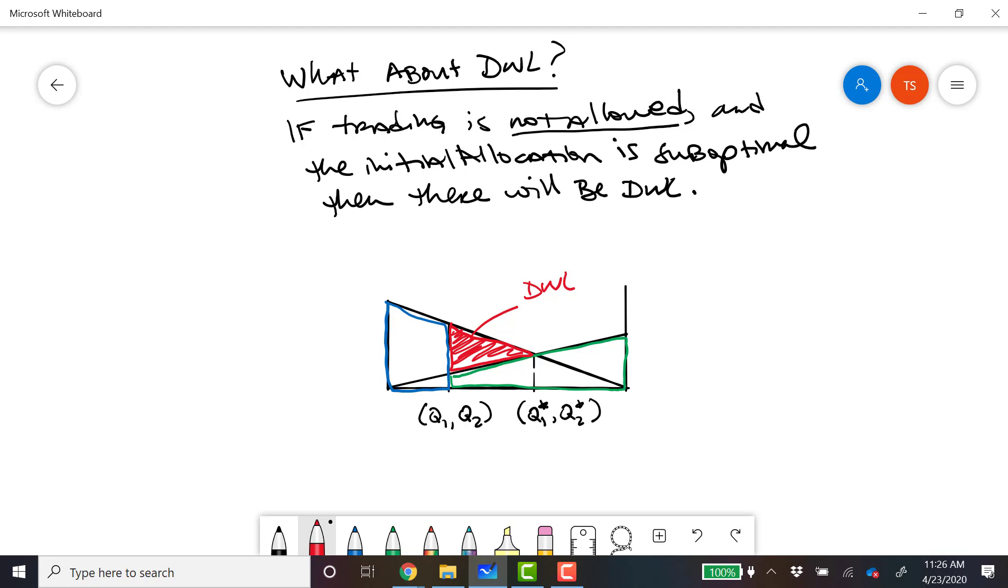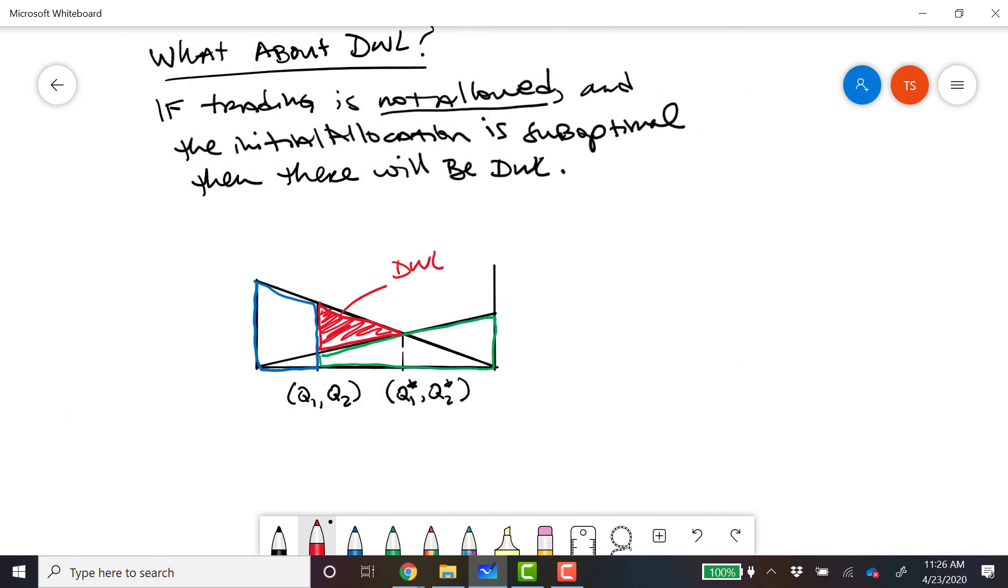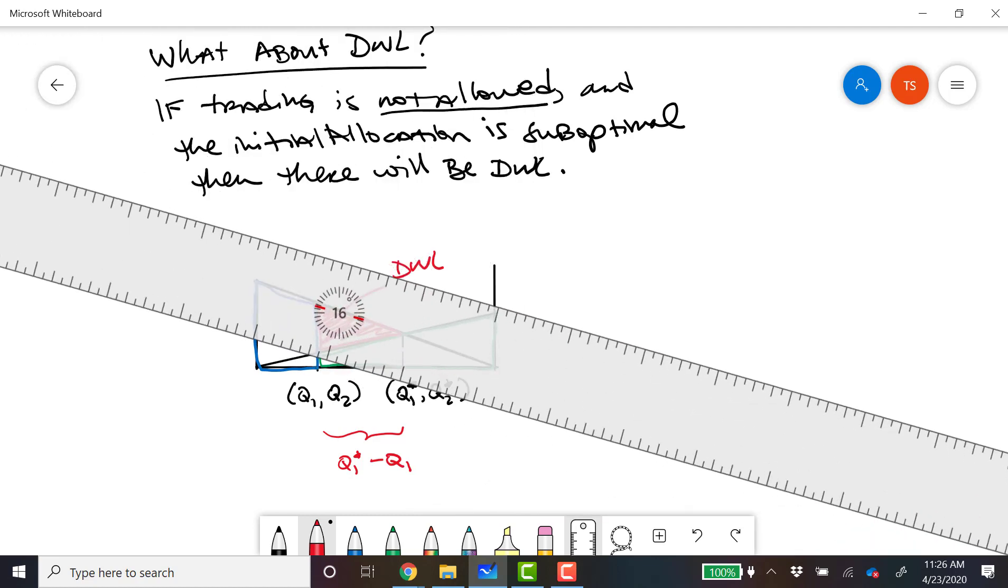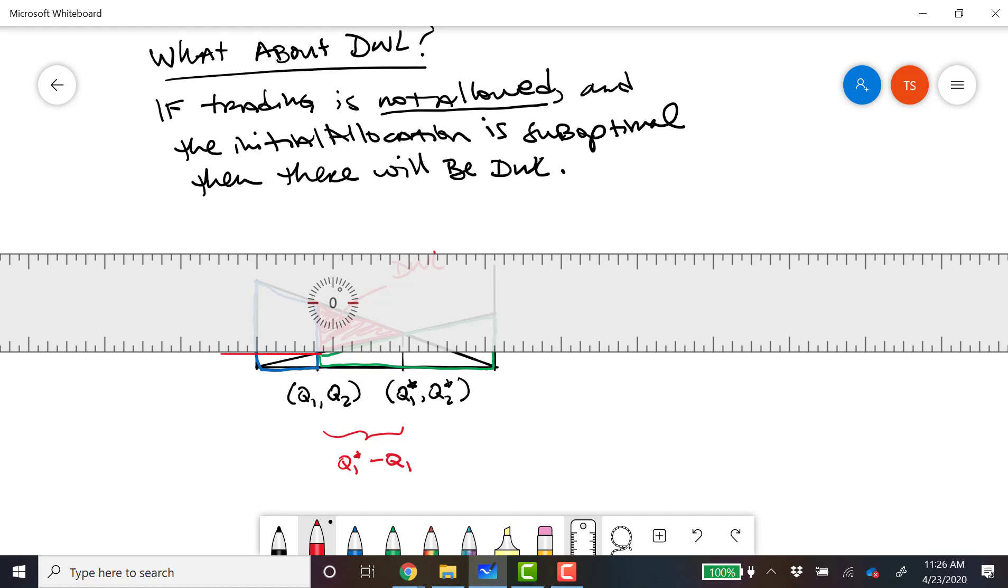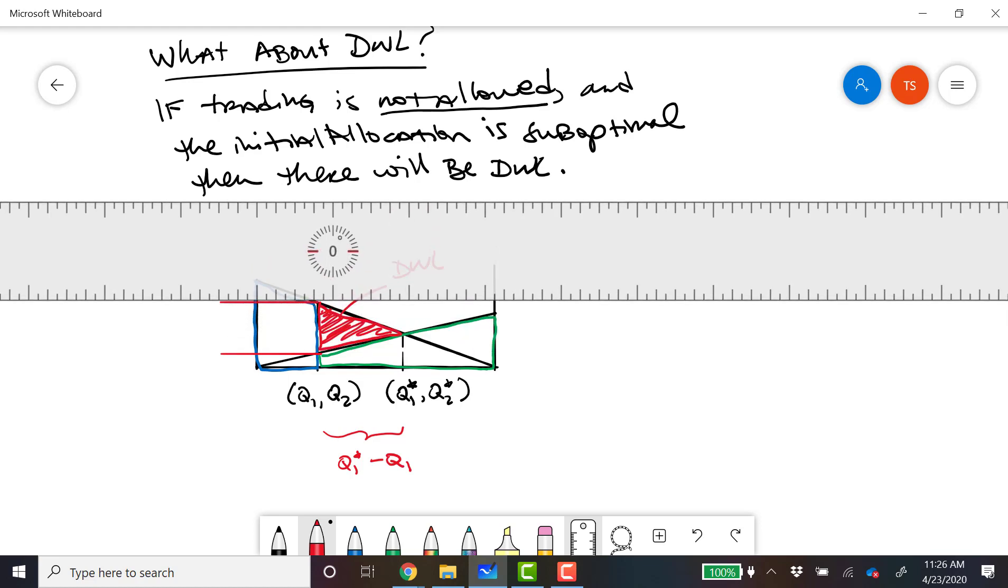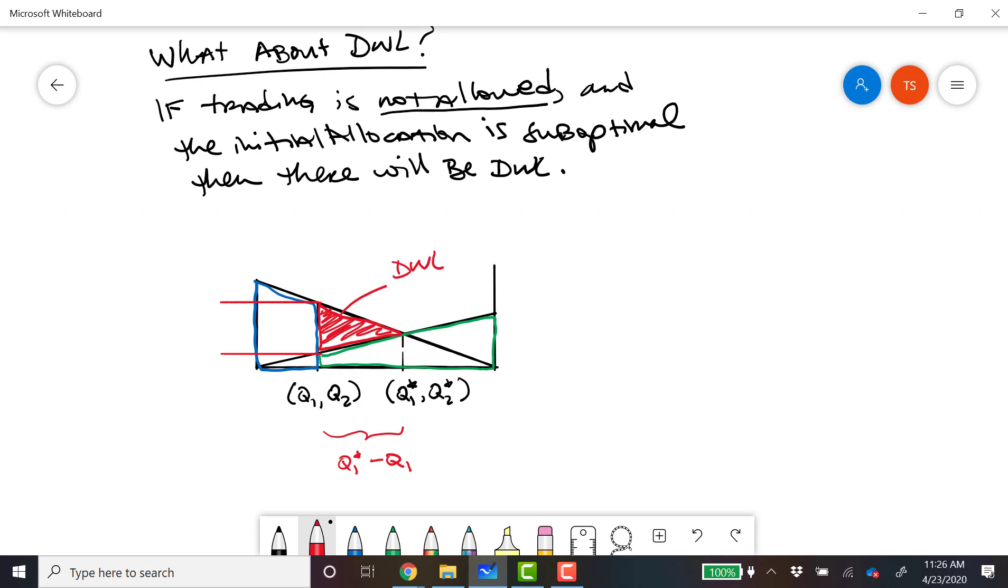So in this example, the way we would calculate the deadweight loss is it's just a triangle. So the base of this triangle is Q1 star minus Q1. And the height of this triangle is the difference between these two heights. What are these two heights? Well, this guy is the willingness to pay, right? This is P1 evaluated at Q1. And this is P2 evaluated at Q2.